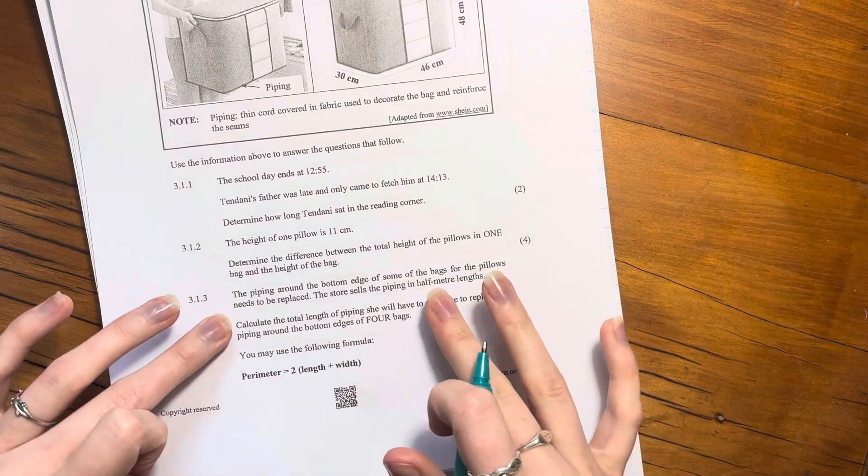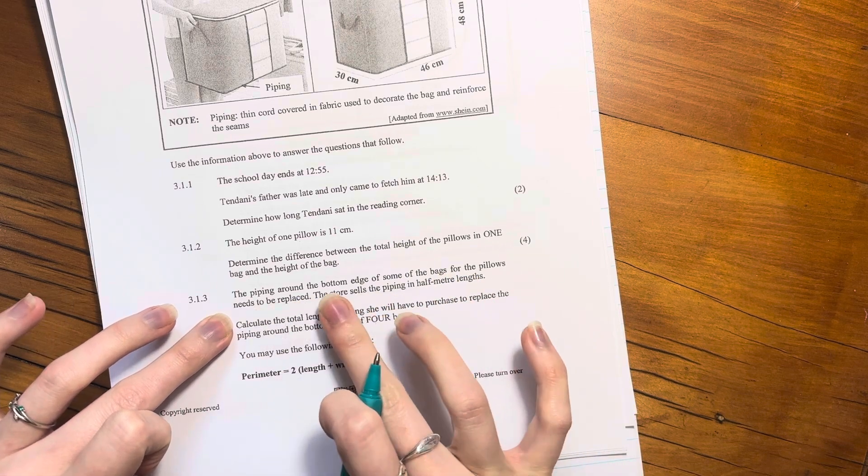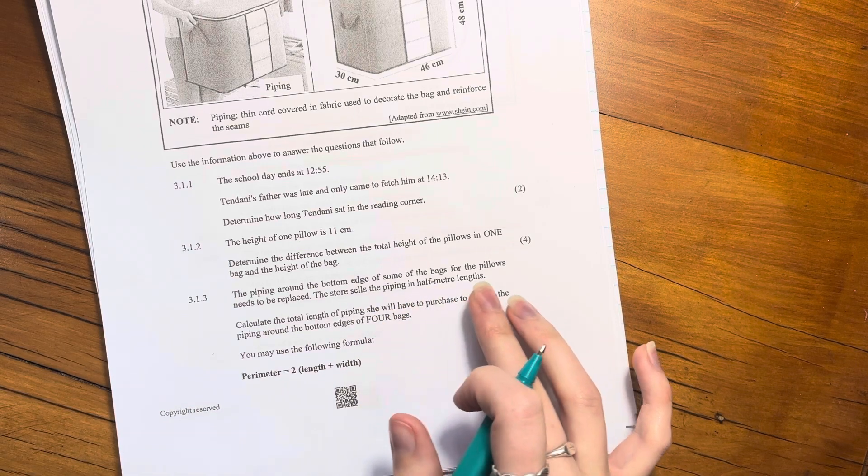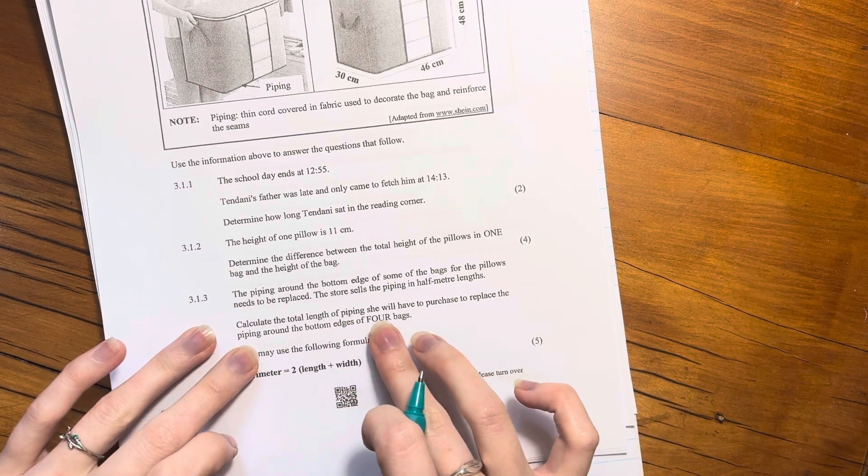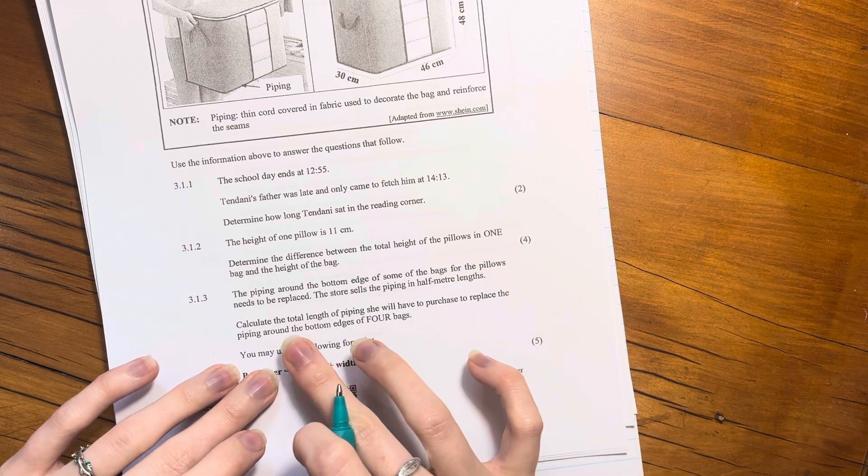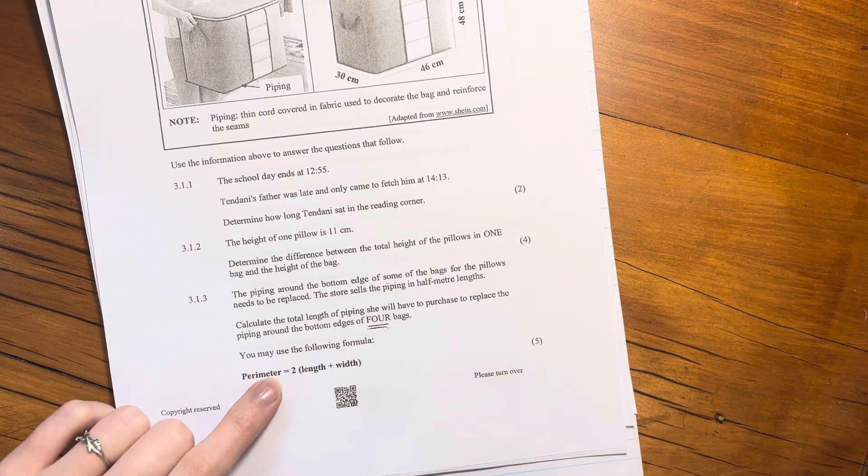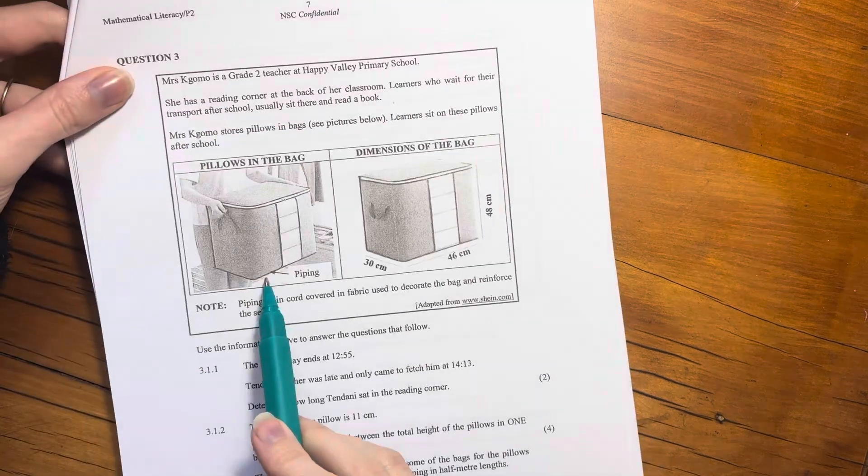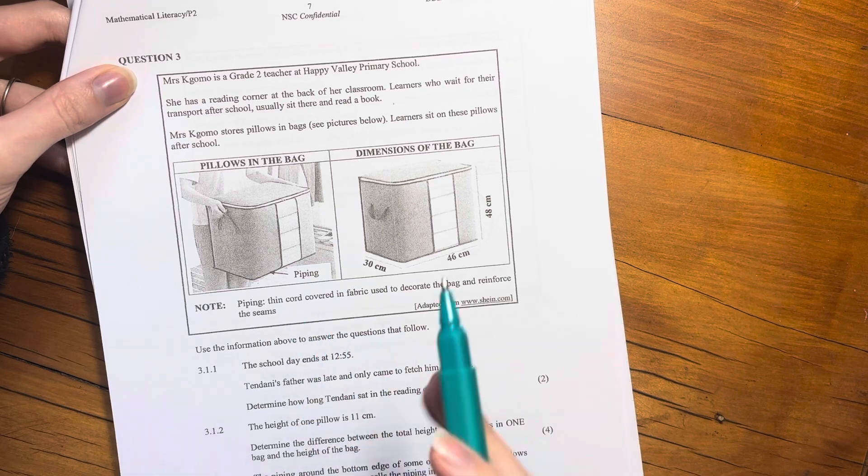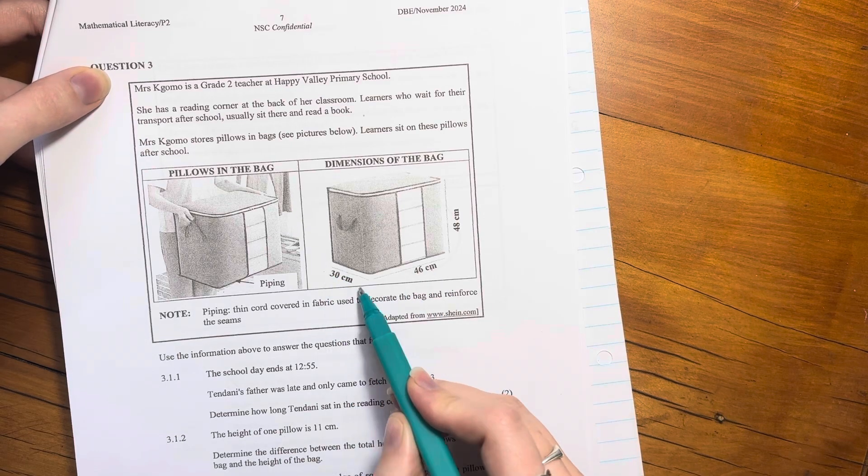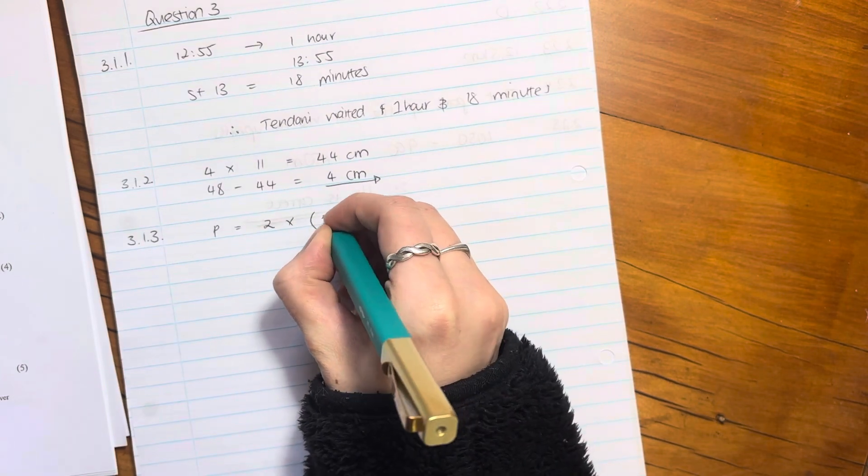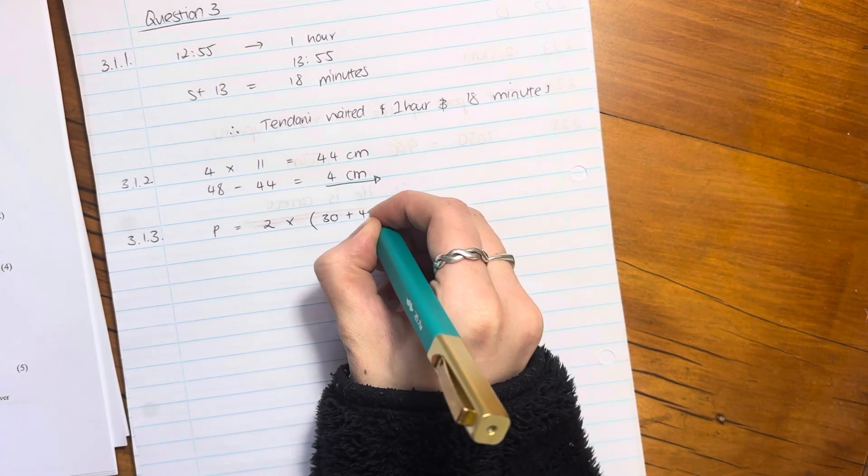The piping around the bottom edge of the bag, the piping around the bottom edge of some of the bags for the pillows needs to be replaced. The store sells the piping in a half meter length. So calculate the total length of piping she will have to purchase to replace the piping around the bottom edges of four bags. You may use the formula. So the piping is just at the bottom there, because it says that it's at the bottom just to support the bottom of the bag. So the length is 46 and the width is 30. So the perimeter is 2 times 30 plus 46.